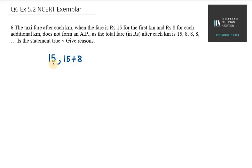15 plus 8 equals 23. Now you have to add 8 to 23, so it will be 31. 31 plus 8 is 39, and so on. This sequence will form an AP.